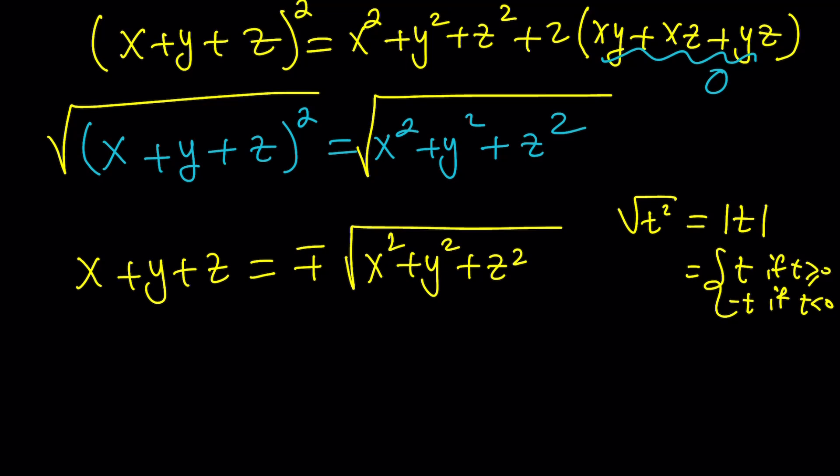Notice that the square root of a sum, which is real, is always greater than or equal to 0. But since x, y, z all have to be different from 0, this is always going to be positive. With the plus minus sign, it's either positive or negative.